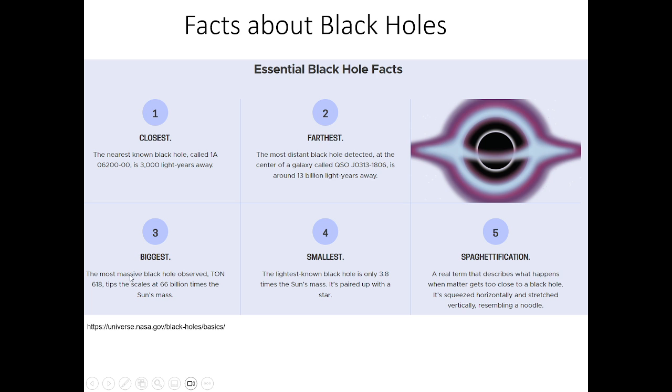Now the biggest black hole. The biggest black hole that we've ever seen, which is called TON618, is 66 billion times the sun's mass. And the smallest black hole is only 3.8 times the sun's mass. It's paired up with a star.